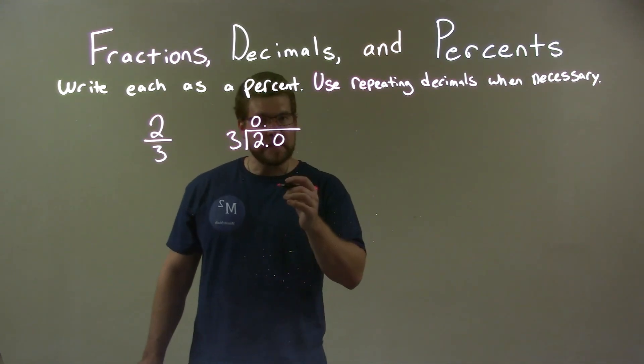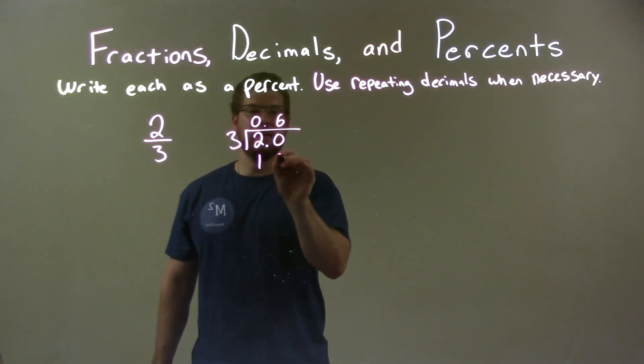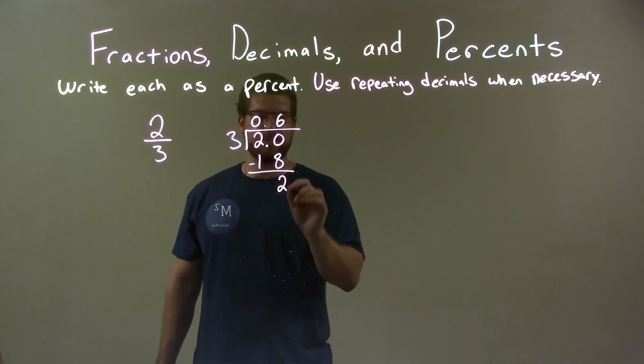Three goes into twenty, it's going to be six times. Six times three is eighteen. We then subtract twenty and eighteen—eighteen from twenty—we got two. We add another zero, bring it down...